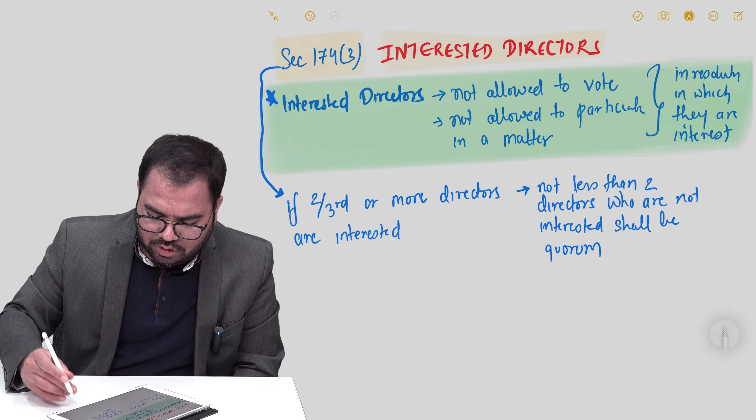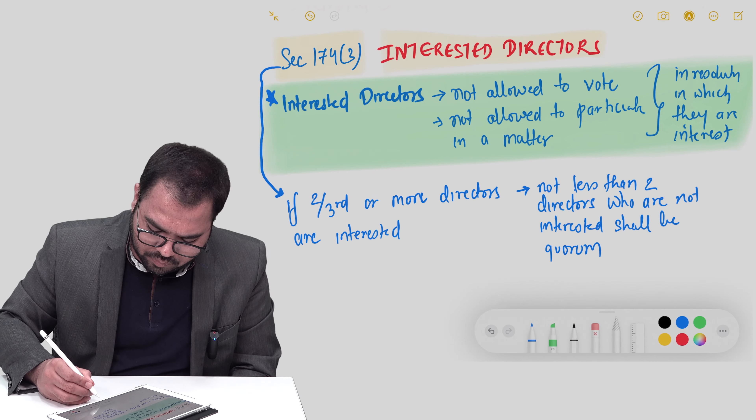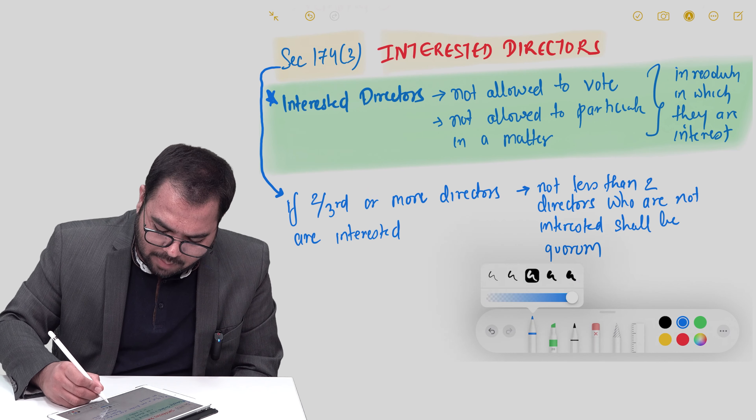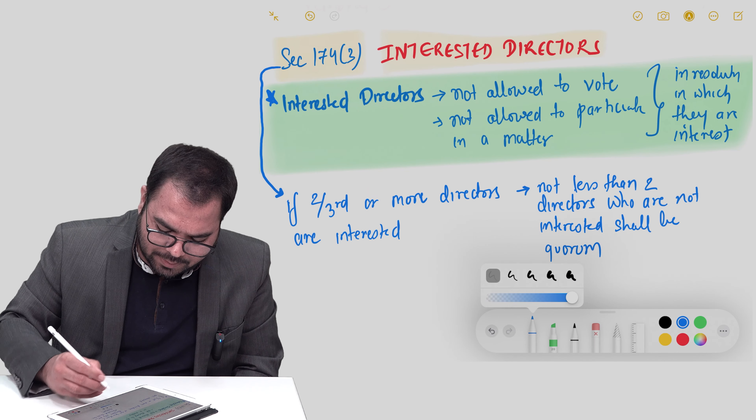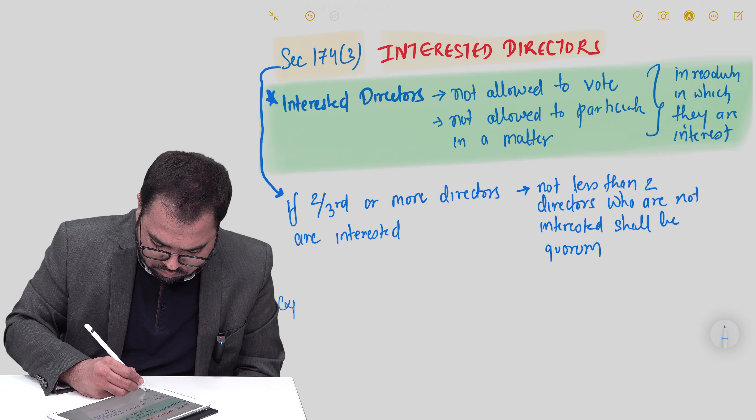Now coming specifically to Section 174 subsection 3: if two-thirds or more directors are interested in a matter, then the directors who are not interested — but not less than two — shall be the quorum during such time.